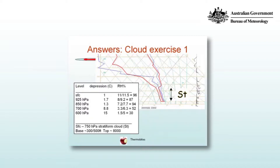If you look at the values of R and RS for each of those levels, you'll see high humidities in the lower parts of the trace up to 850 hectopascals, dropping back to nearly 50% at 700 and 30% at 600 hectopascals. It looks like there's a clearly defined region where the atmosphere is very moist, and we can infer stratus cloud.